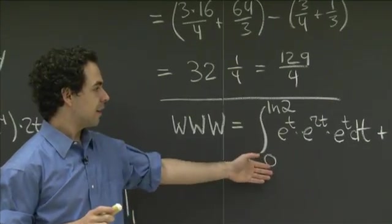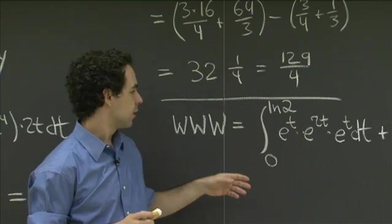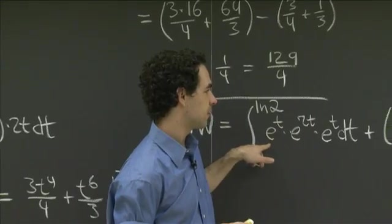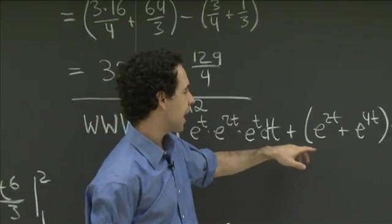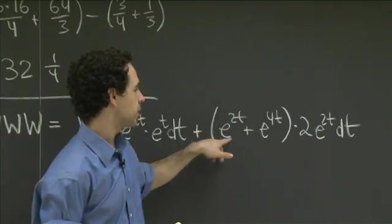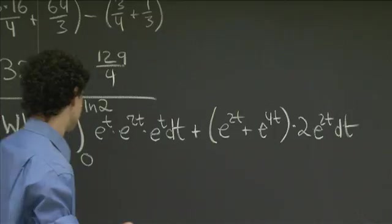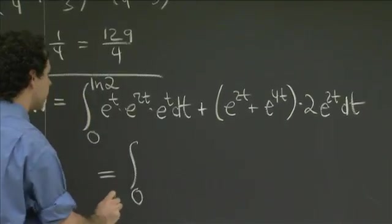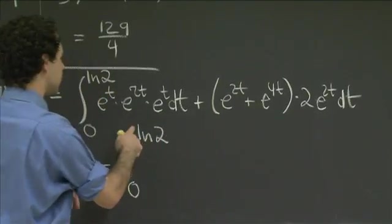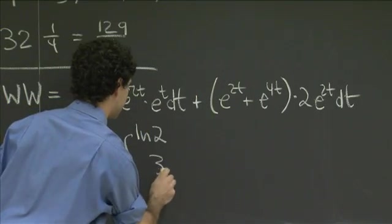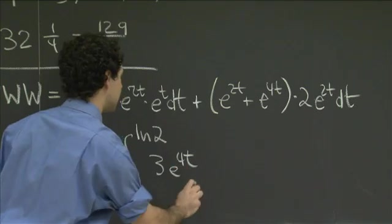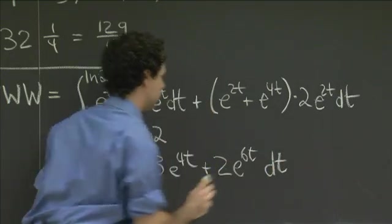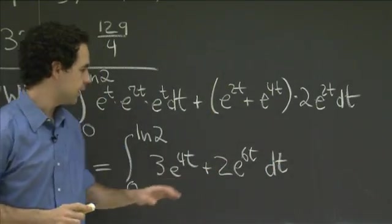So now let's take this integral and let's start simplifying it. So this is an e to the t times e to the 2t times e to the t, so that's e to the 4t dt. And here we have, that looks like a 2e to the 4t plus 2e to the 6t dt. So if we combine like terms, we get the integral from 0 to natural log of 2. We had an e to the 4t and a 2e to the 4t, so that's 3e to the 4t plus 2e to the 6t dt.